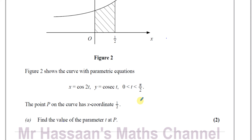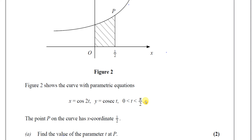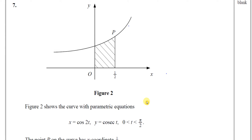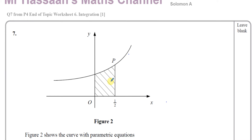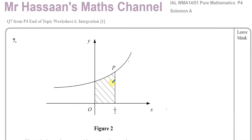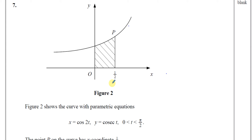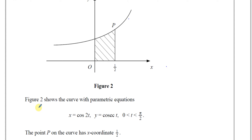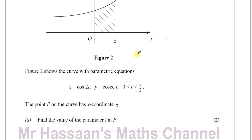This question is about parametric equations and finding the area under a parametric graph. The curve shown in figure two has parametric equations x = cos(2t) and y = cosec(t), with values of t between 0 and π/2.